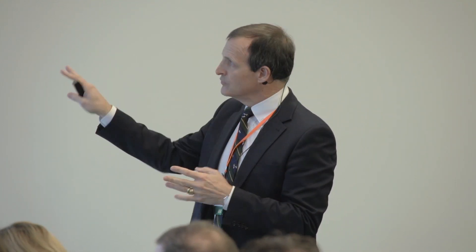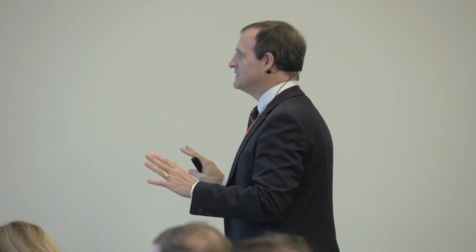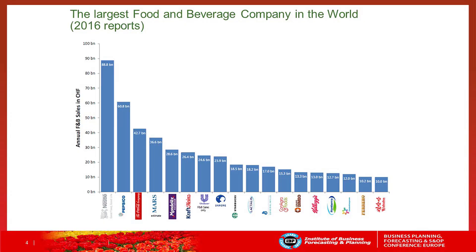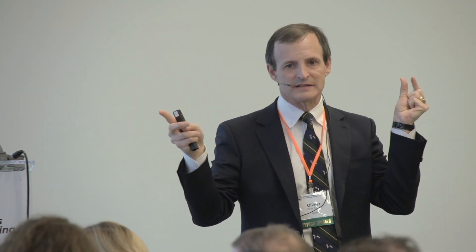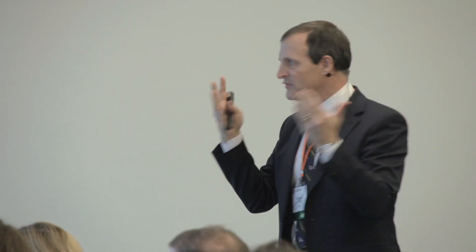The second point, in terms of influences on demand planning, is the size. These are just 2016 figures. With close to 90 billion USD in net net sales, that makes us the biggest company in the food industry. That's a big challenge — a slight error in what you plan may have big consequences at the end. That's something very difficult.